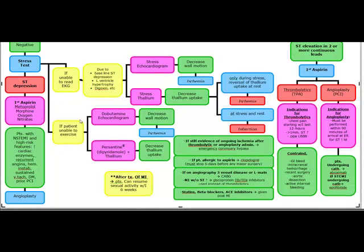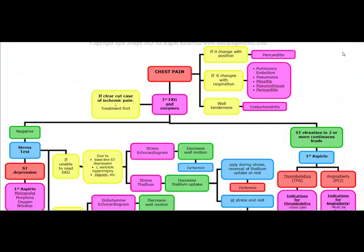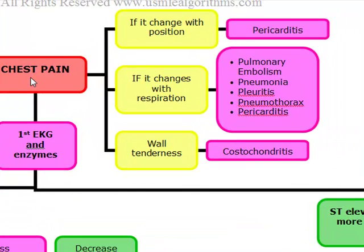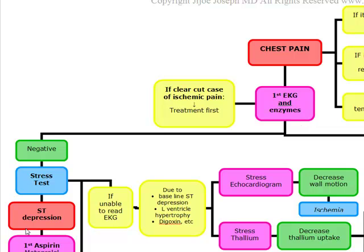Coronary catheterization is the next best step as long as it can be performed within 90 minutes, but it can actually be delayed up to 48 hours while the patient is being stabilized. Coronary catheterization is much more important to be done early in STEMI than in NSTEMI. You're also going to add either IV heparin or low molecular weight heparin. IV heparin is preferred if procedures are planned; low molecular weight heparin is preferred if no invasive procedures are planned.